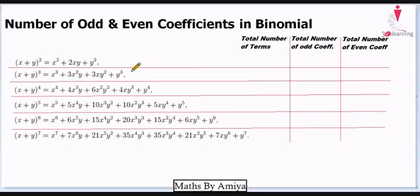In this video, we try to learn a simple concept of binomial. The first concept is total number of terms. Binomial means a bracket which has only two different terms.